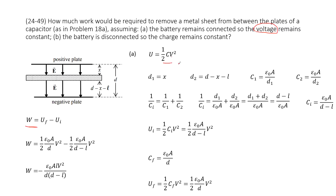We first look at the capacitance at initial. At initial, we have one plate, then the metal sheet, then another plate. We can consider this as two capacitors in series connection — C1 and C2. For C1, D1 is x. For C2, D2 is D minus x minus L. So we can get the capacitance for C1 and C2 from these two equations.